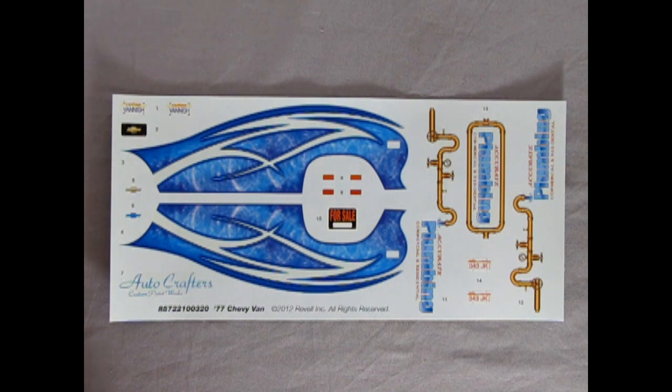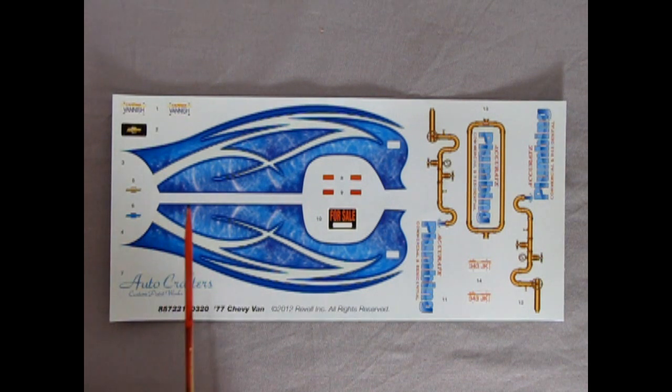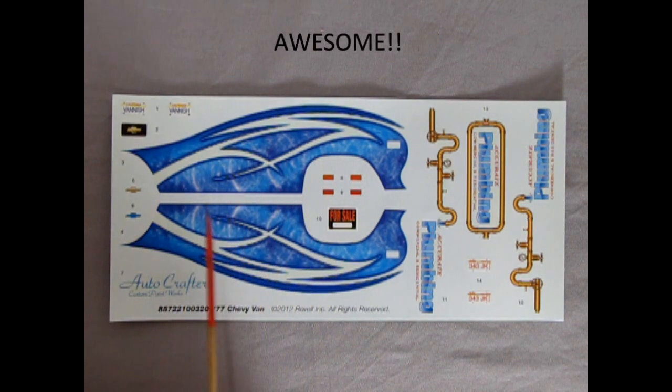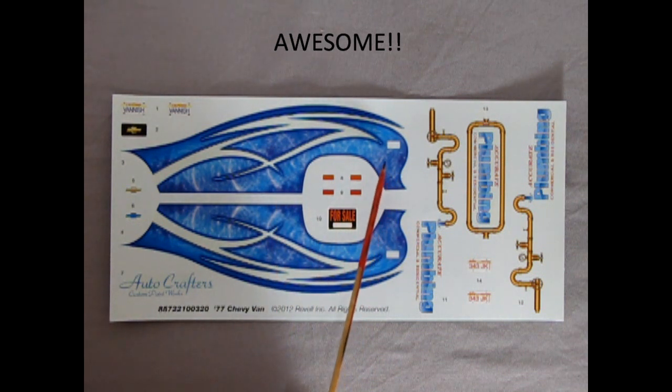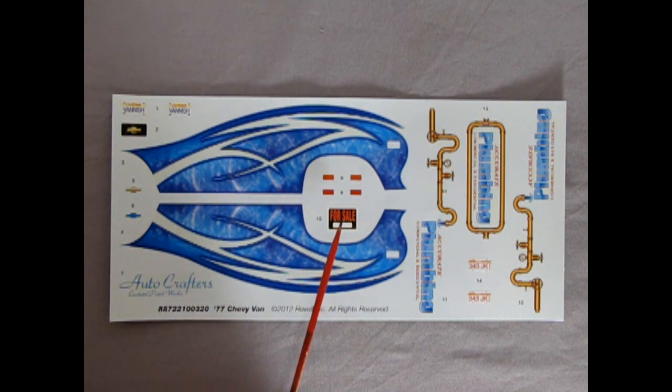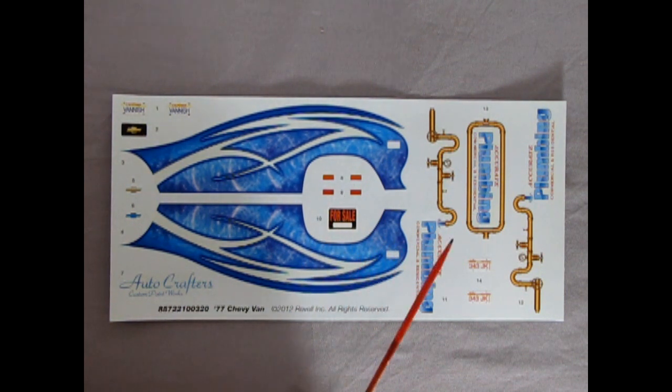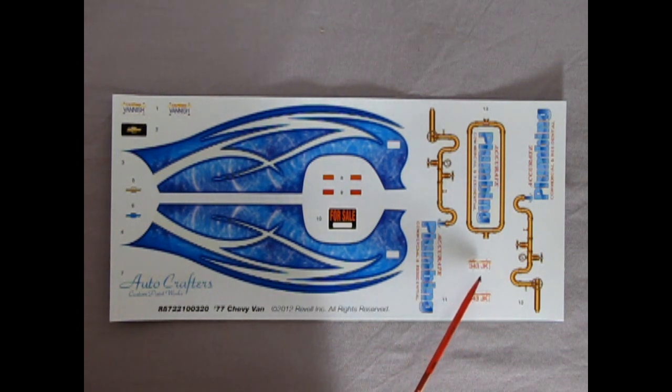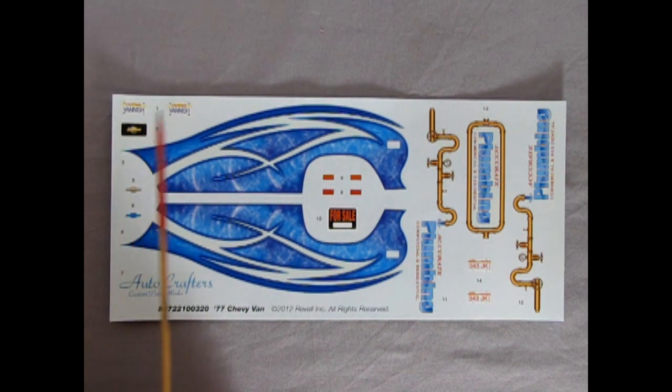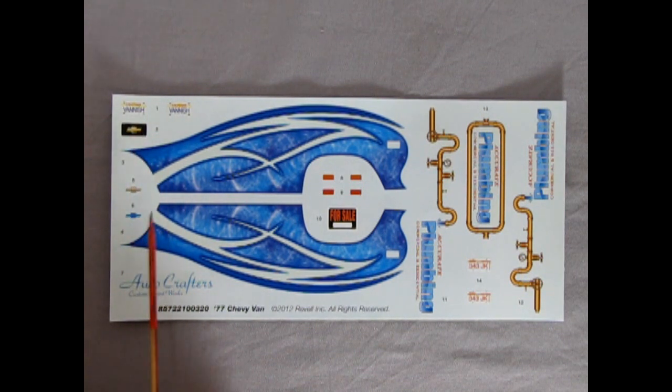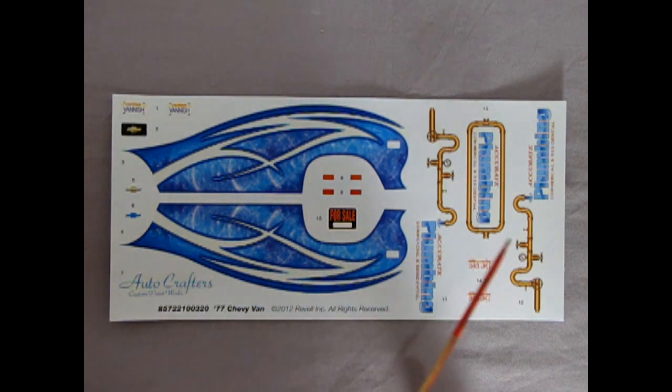Here we have our decal sheet which I will give five gold stars on. Because this thing is really psychedelic. And as you can see here you got this nice blue pattern on. You got a for sale sign. Here's our side marker lamps as decals. And then you've got this nice stuff from Accurate Plumbing on here. Illinois again 343 JK. And up here California Vanish. You also get a black Chevy license plate. And then you've got your choice here for the grille. And then here's your Autocrafters Custom Paintworks. So again very very groovy.